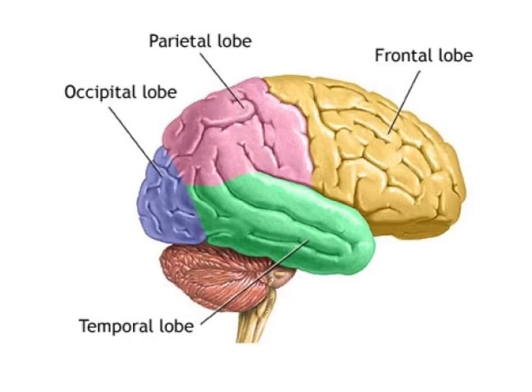Two major parts of the limbic system are the hippocampus, which is the place where new memories are formed, and the amygdala, the fear center of your brain.